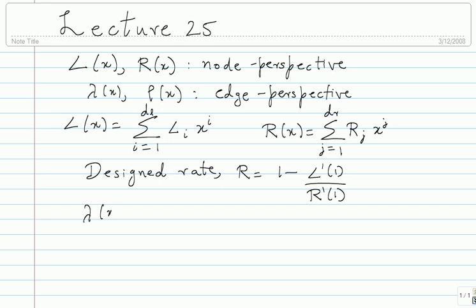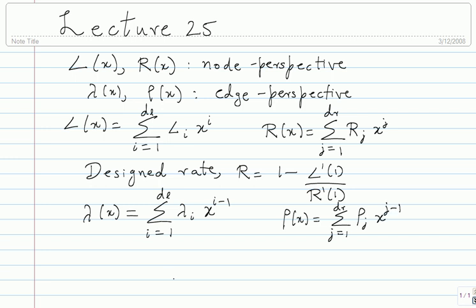Lambda(x) and rho(x) are the edge-perspective distributions. Lambda(x) is summation of lambda_i times x to the power i minus 1. Similarly, rho(x) is summation j equals 1 to d_R of rho_j times x to the power j minus 1. There is a relationship: lambda(x) equals L-prime(x) divided by L-prime(1). This is a very convenient short way of writing the relationship between lambda(x) and L(x). Similarly, rho(x) equals R-prime(x) divided by R-prime(1).